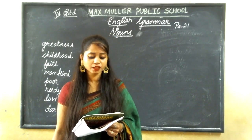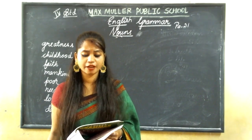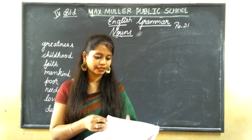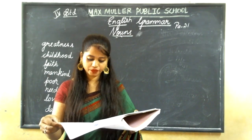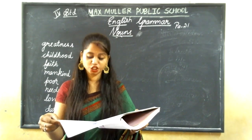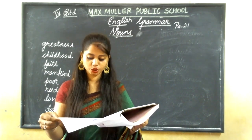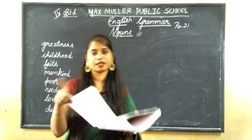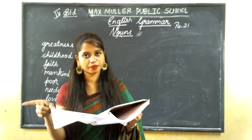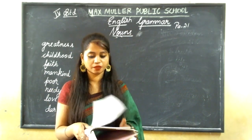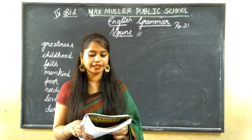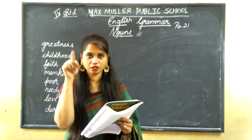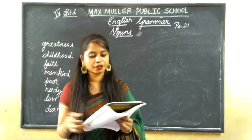Let me repeat the answers: first row — C, U, U, U, C. Second row — C, U, C, U, C.